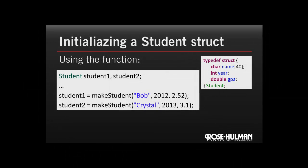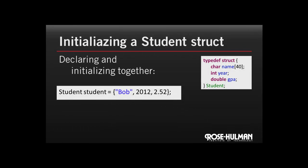If we want to use that function, it's pretty easy. In this example, we're declaring two students — student_one and student_two. Then later on in our code, we can just say that student_one gets the result of the make_student function, which is going to be a struct with Bob's information put into it. Similarly for student_two with Crystal. Here's a shortcut: it only works when we declare and initialize the struct all on the same line.